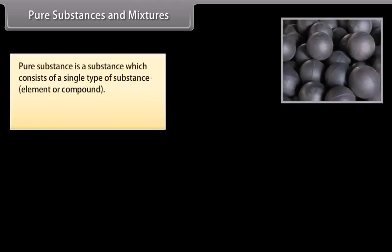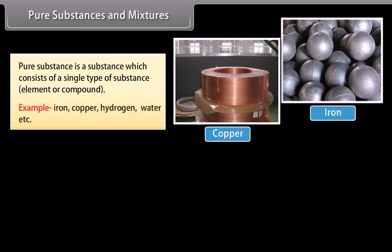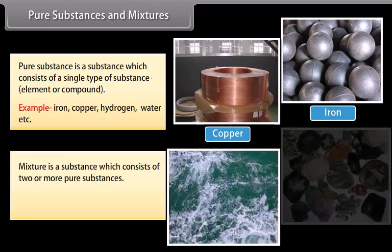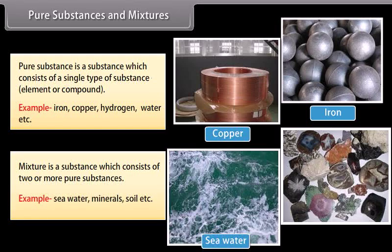Pure substances and mixtures. A pure substance is a substance which consists of a single type of substance — element or compound. Examples: iron, copper, hydrogen, water, etc. A mixture is a substance which consists of two or more pure substances. For example: sea water, minerals, soil, etc.